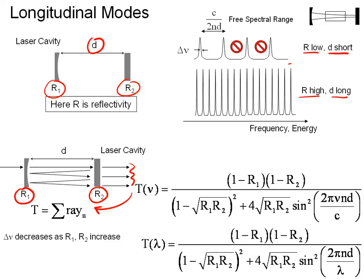The top formula is the transmission as a function of frequency. The bottom formula is the transmission as a function of wavelength. And this is given in your book, so I'm not going to spend a lot of time on this.